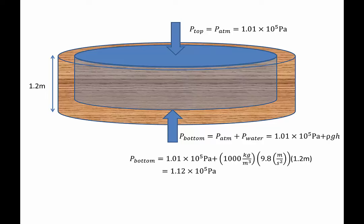So we can just do that calculation, 1.01 times 10 to the 5th Pascal. Density of water is approximately 1,000 kilograms per cubic meter. We put in gravity, we put in the depth of my pool, and we find that in the end, the pressure at the top of the pool is 1.01 times 10 to the 5th Pascals. The pressure at the bottom of the pool is 1.12 times 10 to the 5th Pascals. It's not that much more. It's not that much water, to be blunt. It's only about 4 feet deep.